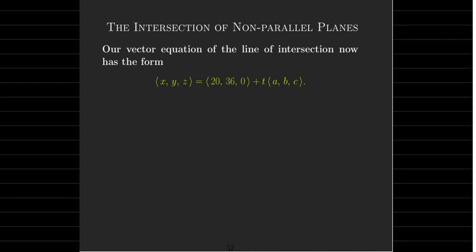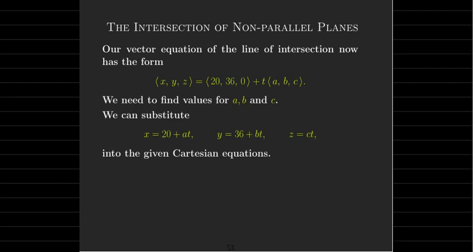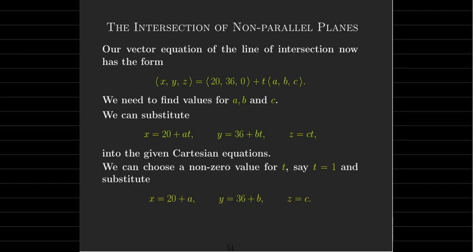Our vector equation has this form: we know an initial point (20, 36, 0) and some unknown direction vector with components A, B, C. To find A, B, and C, we take the plane equations and substitute the parametric equations in for X, Y, and Z. It's even easier to just choose a convenient non-zero value for T, like T equals 1, making the substitution X equals 20 plus A, Y equals 36 plus B, and Z equals C.